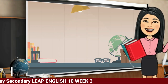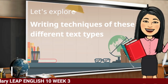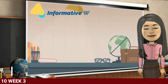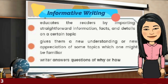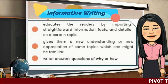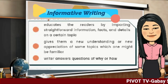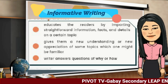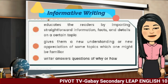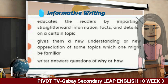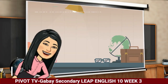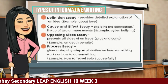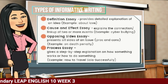Now that you have accomplished the first task, let us explore the writing techniques of these different text types. Informative writing educates the readers by imparting straightforward information, facts, and details on a certain topic. It gives them a new understanding or new appreciation of some topics which might be familiar. In informative writing, a writer answers questions of why or how. The four types of informative writing are definition, cause and effect, opposing sides, and process essay.